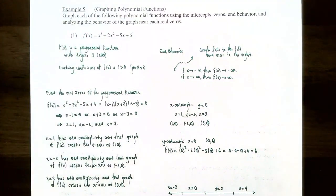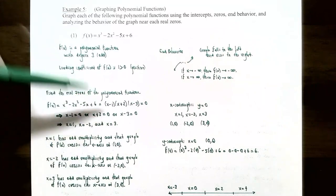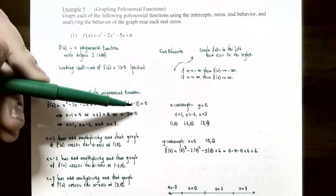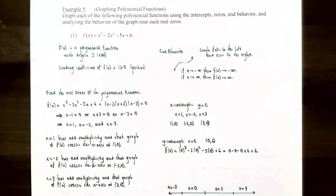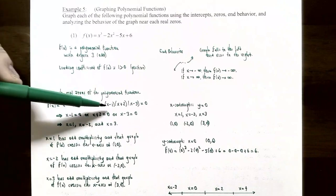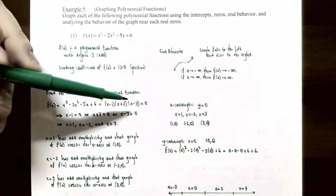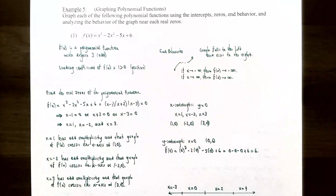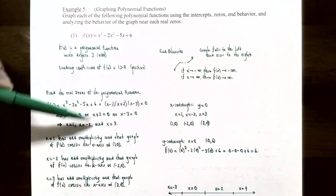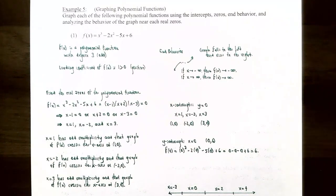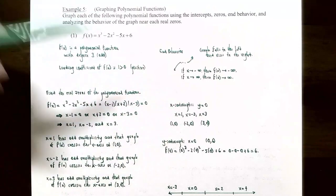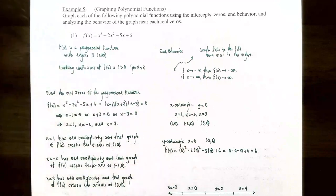Now find the real zeros by factoring: f(x) = (x - 1)(x + 2)(x - 3) = 0. Setting each factor to zero gives x = 1, x = -2, and x = 3. These are the real zeros, corresponding to x-intercepts at (1, 0), (-2, 0), and (3, 0). The y-intercept is found by substituting x = 0: f(0) = 0 - 0 - 0 + 6 = 6, so the y-intercept is (0, 6).